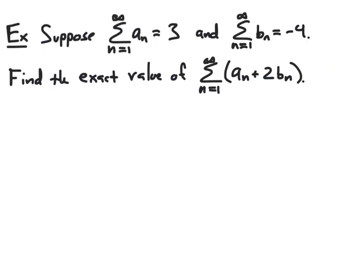In this example, we're told that the series from n equal 1 to infinity of a sub n converges to 3, and the series from n equal 1 to infinity of b sub n converges to negative 4. We'd like to use these two values to find the exact value of the series from n equal 1 to infinity of a sub n plus 2b sub n. We observe that this series is formed by a sub n and b sub n using addition and scalar multiplication, so we can break it up using the properties we just discussed.